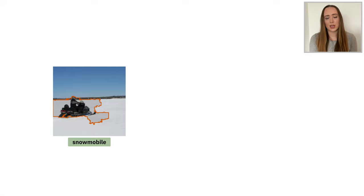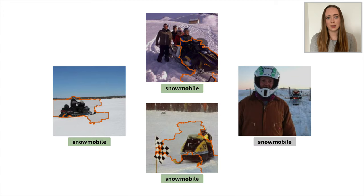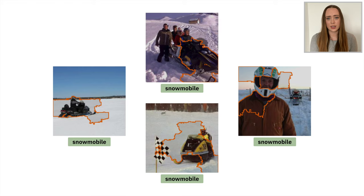This is promising, but you want to explore some additional examples. So you sample two more images from your dataset and see a similar pattern. Both are correctly classified and the explanation highlights the snowmobile, so your confidence in your model is growing. But what if you were to sample again and get this image? Now you might not feel quite as confident. It's correctly classified, but its explanation highlights the helmet as opposed to the snowmobile. While helmets and snowmobiles are definitely correlated, you would not want your model to have learned a rigid dependence between the two.